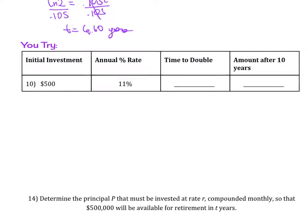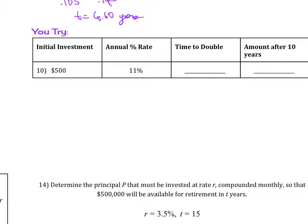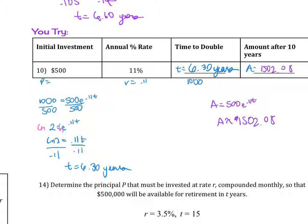So you can try this example here. Pause the video and see if you can do it. Alright, you've tried this out. The time would have been 6.3 years to double the investment, and then the amount after 10 years is $1502.08.